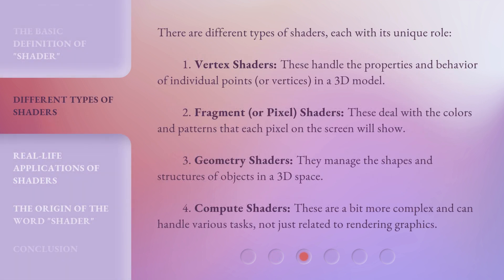There are different types of shaders, each with its unique role. 1. Vertex shaders: these handle the properties and behavior of individual points or vertices in a 3D model. 2. Fragment or pixel shaders: these deal with the colors and patterns that each pixel on the screen will show. 3. Geometry shaders: they manage the shapes and structures of objects in a 3D space. 4. Compute shaders: these are a bit more complex and can handle various tasks, not just related to rendering graphics.